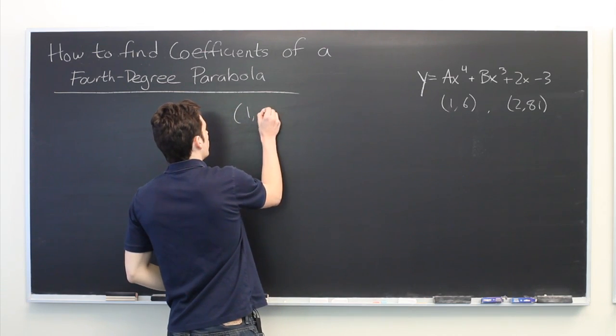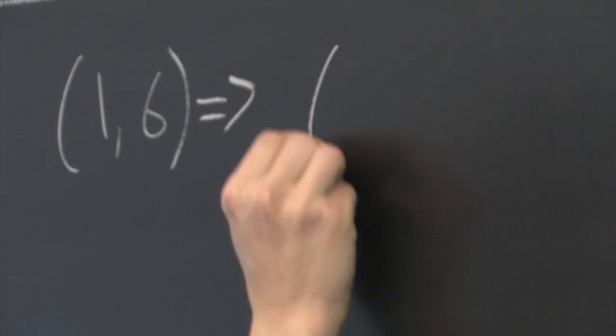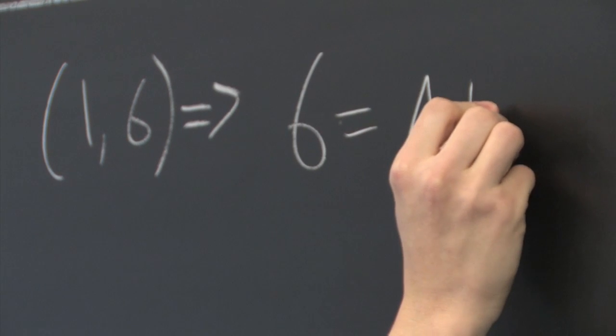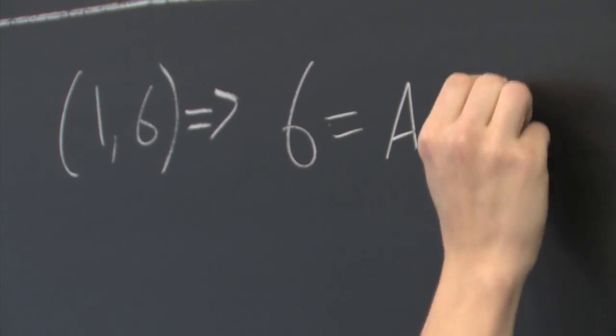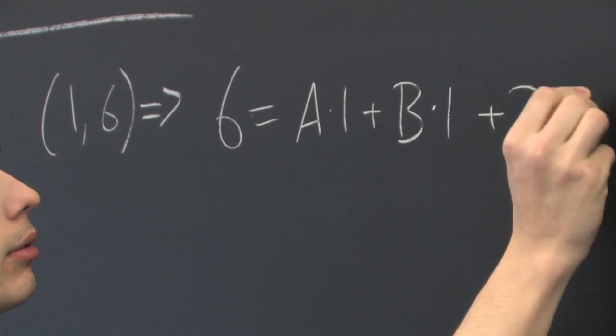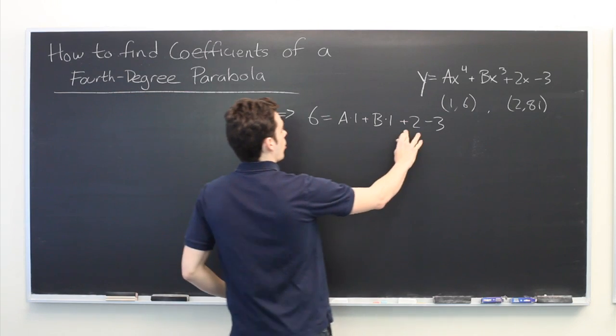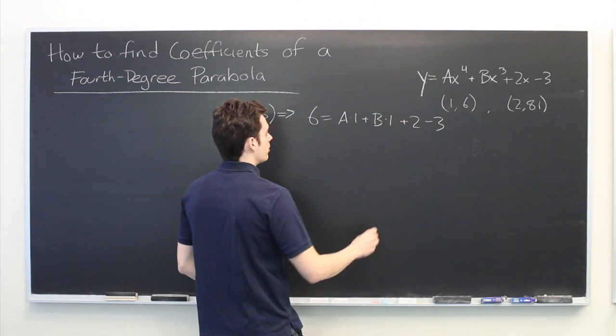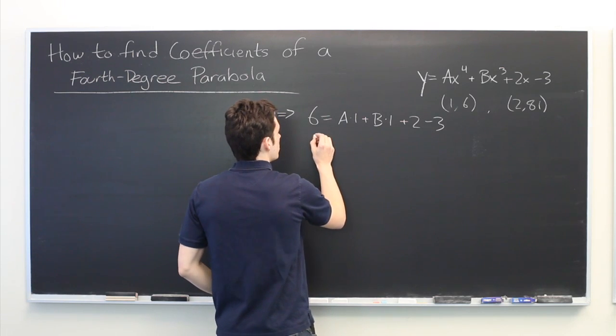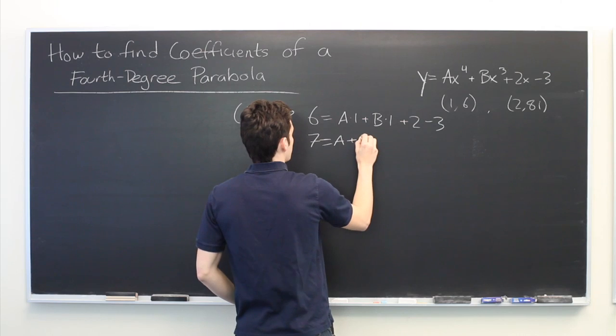So plugging in (1,6) tells us that six equals a times one plus b times one plus two minus three. And we can clean this up a little bit by bringing over both these constants to the other side. So let's see here. Seven equals a plus b.